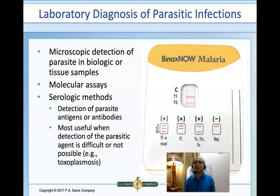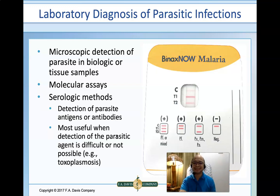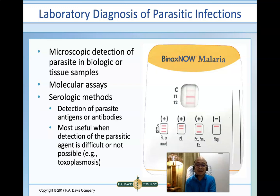That is the reason why adjuncts to classical microscopic detection include molecular assays or serologic methods. If untrained medical technologists perform microscopic examination, the possible outcome would be false-negative reporting — missing the correct identity of parasites — or worse, artifacts may be mistaken for parasites, resulting in false positives. Serologic methods include detection of parasite antigens or antibodies, and are most useful when detection of the parasite is difficult or may not be possible, such as in toxoplasmosis.